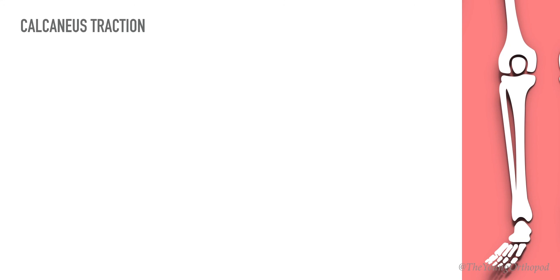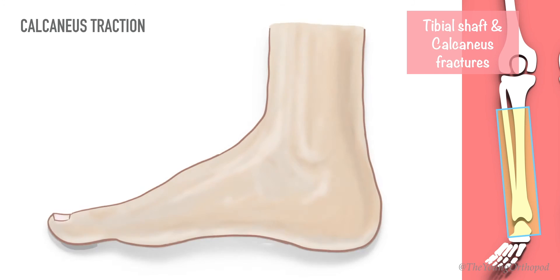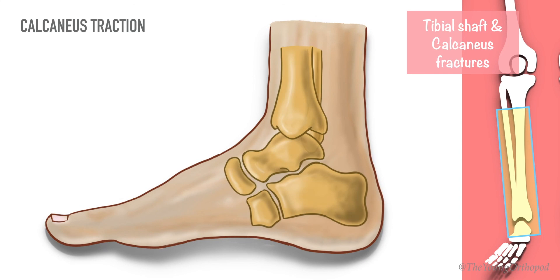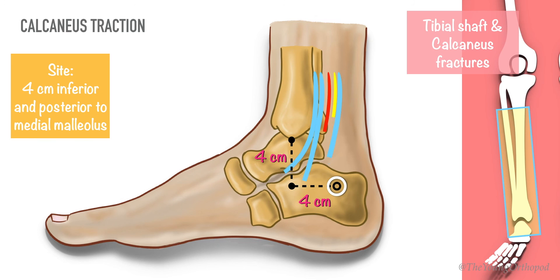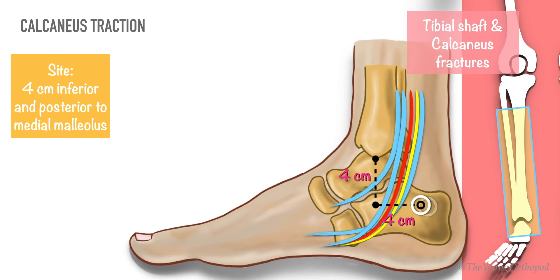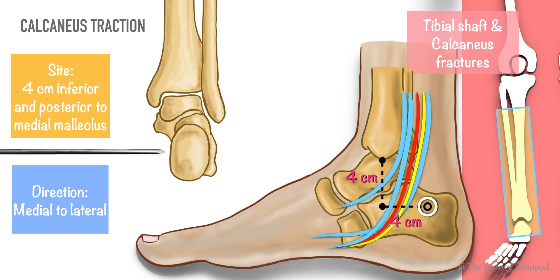Indications for calcaneus traction include tibial shaft fractures or calcaneus fractures. The pin entry site is marked 4 centimeters inferior and 4 centimeters posterior to the medial malleolus. This avoids injury to the tendons and neurovascular bundle passing behind the malleoli, and also avoids pin entry into the subtalar joint. The pin is inserted in a medial to lateral direction.